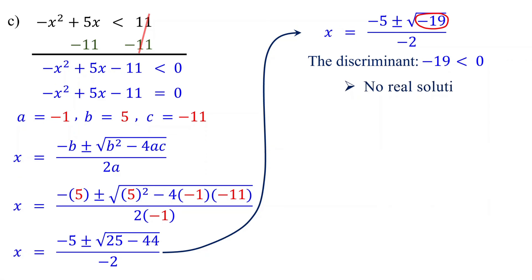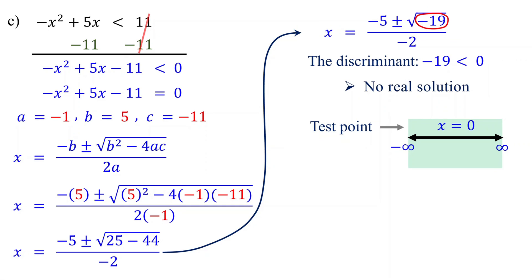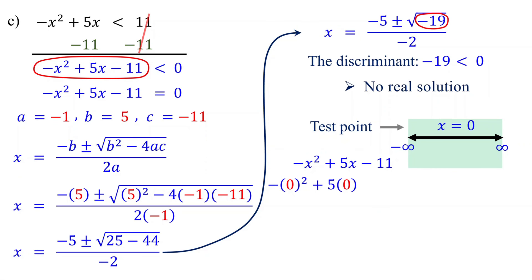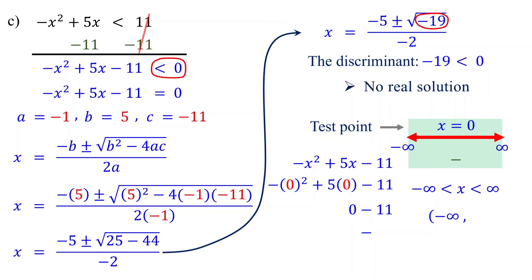Next, draw a number line. Because there is no real solution, we have just one interval, from negative infinity to positive infinity. Now, choose one test point — you can pick any real number, but let's use 0, as it is easier to evaluate. Then, substitute this test point into the quadratic expression rewritten in standard form. 0 minus 11 results in a negative number. Therefore, the quadratic expression is negative for the entire interval. The inequality asks for the values of x that make the quadratic expression less than 0. Since the quadratic expression is negative for the entire interval, the inequality holds true for all values of x. Therefore, the solution is all real numbers.